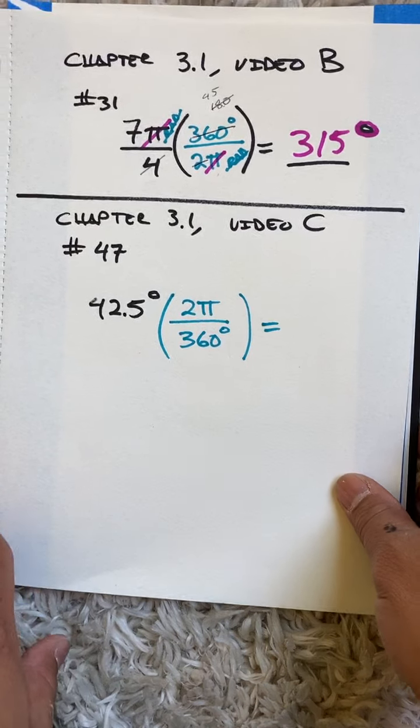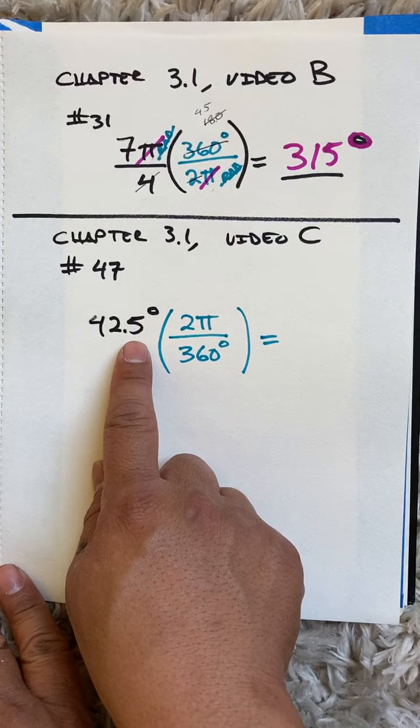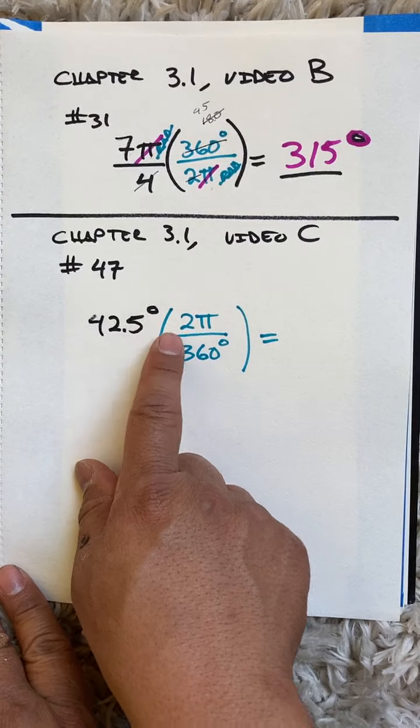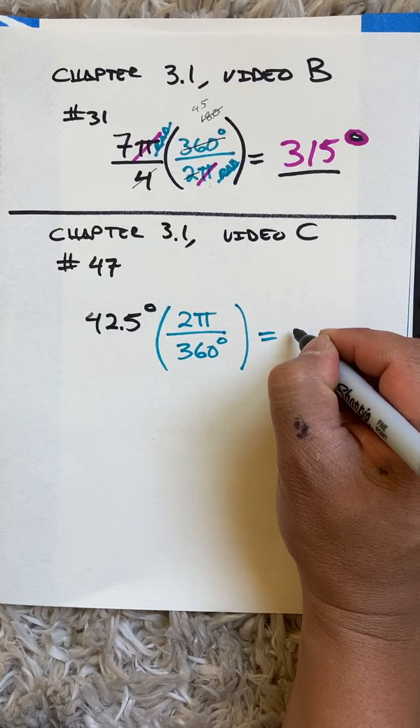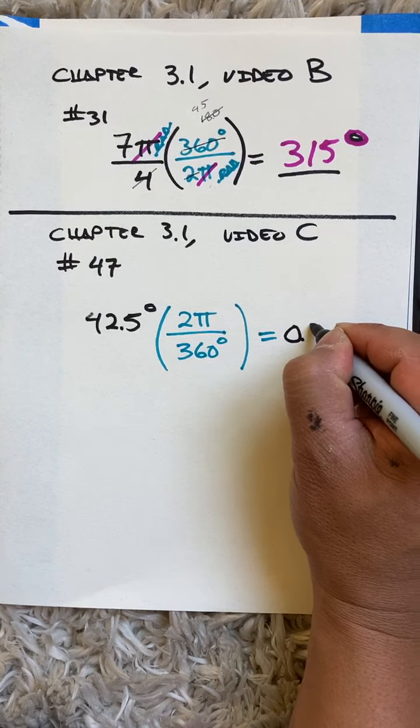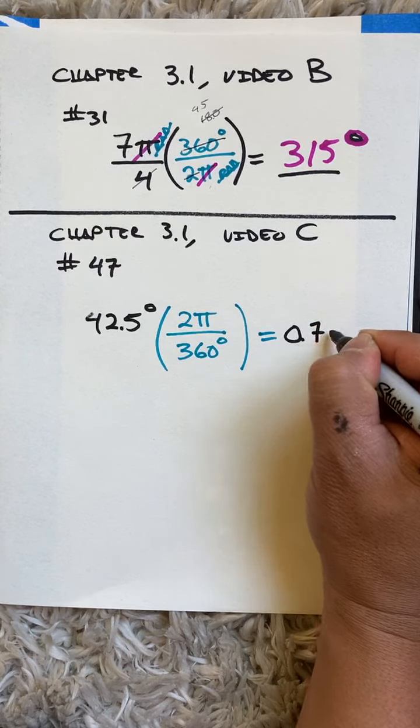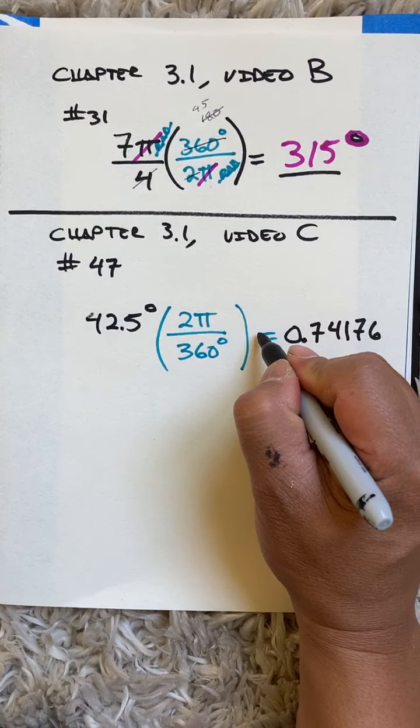Go ahead and multiply that: 42.5 times 2 times pi all divided by 360, and your calculator will give you 0.74176. Now because we are rounding, I'm gonna make this kind of a squiggly line like that. We are approximating and that of course now is in radians.